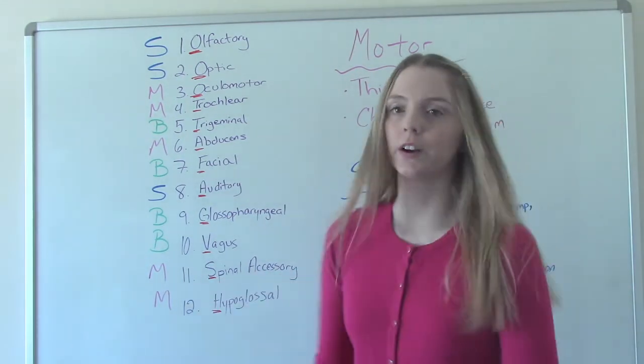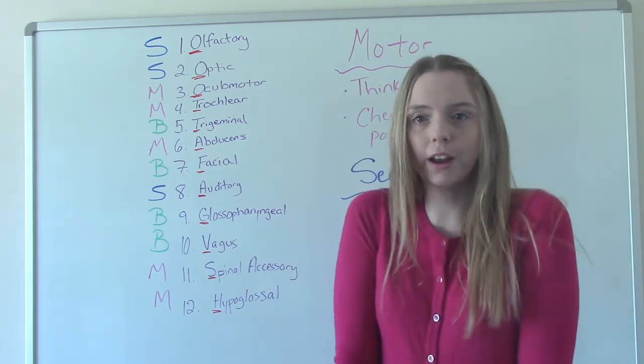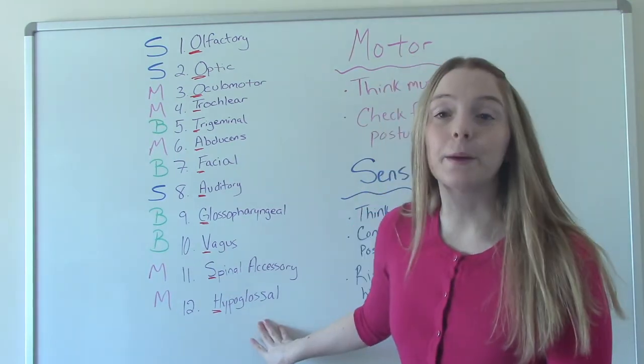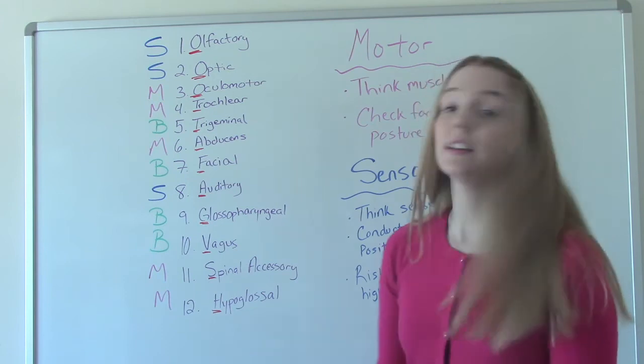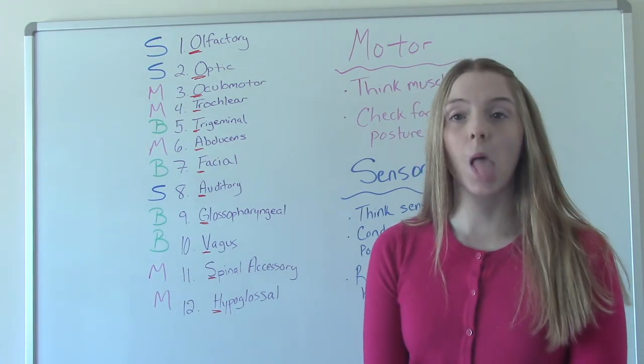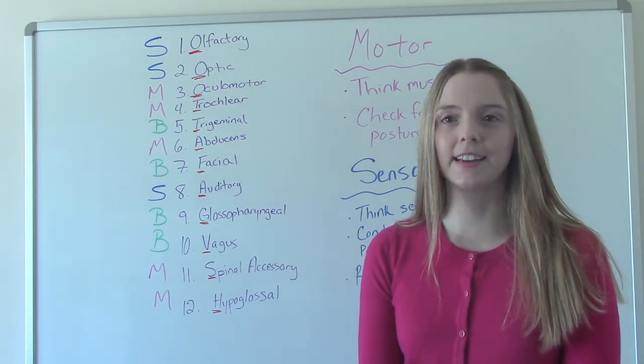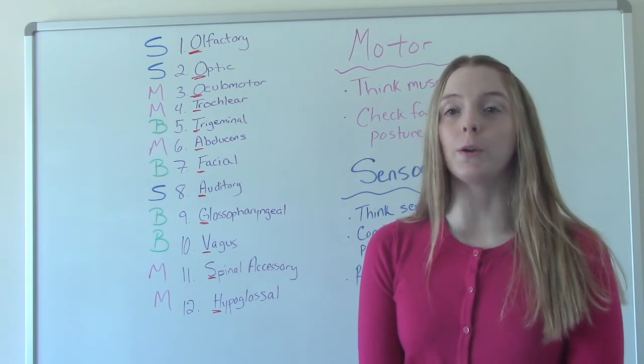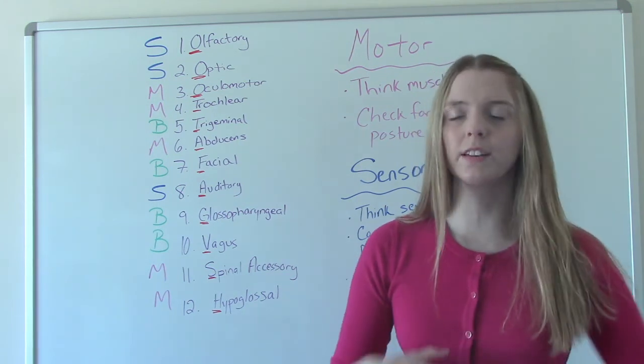Number 11 is motor because this involves our muscles, right? Moving our shoulders. And then finally, number 12, hypoglossal is a motor because that takes movement. That takes muscle movement. So when you hear motor, think movement, think muscles. When you hear sensory, think of our five senses.